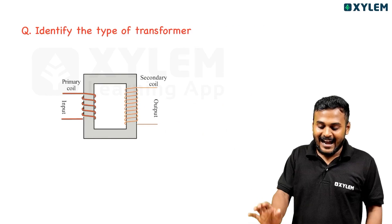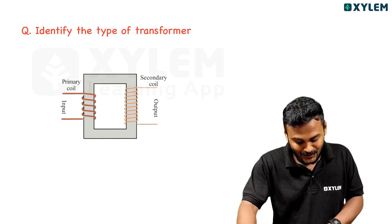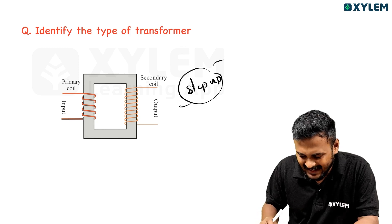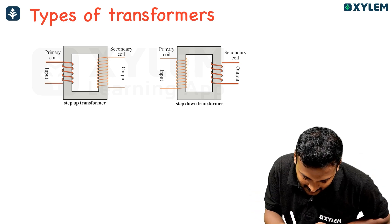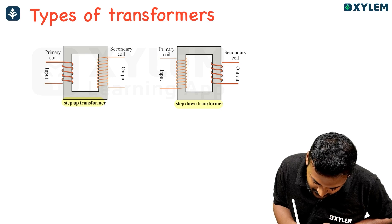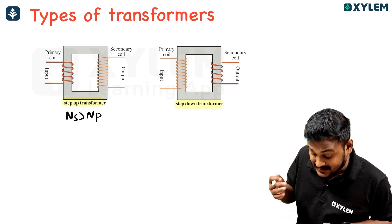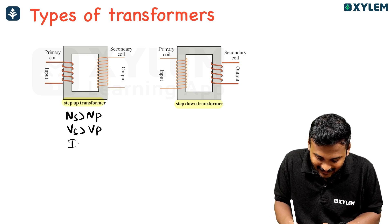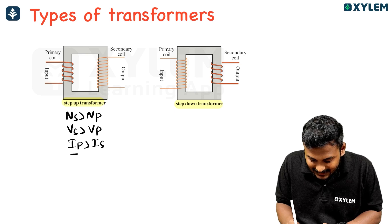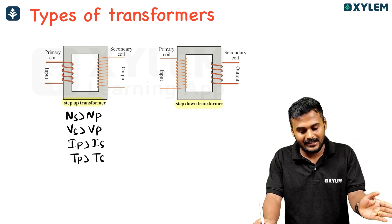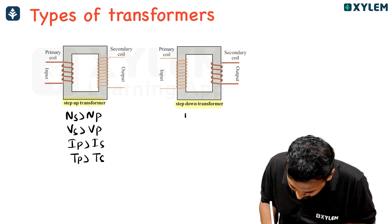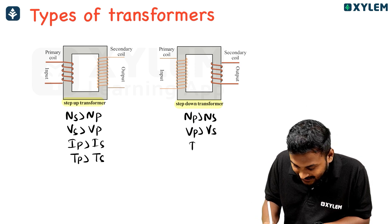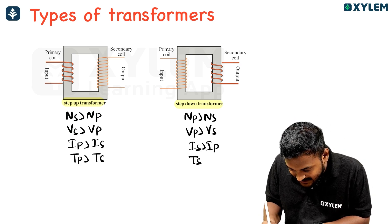Identify the type of transformer. We have transformers — step-up and step-down. For a step-up transformer, NS is greater than NP, so output voltage is higher. For a step-down transformer, the number of turns of the primary is greater than secondary; voltage of primary is greater than secondary; current of secondary is greater than primary; thickness of secondary wire is greater than primary.